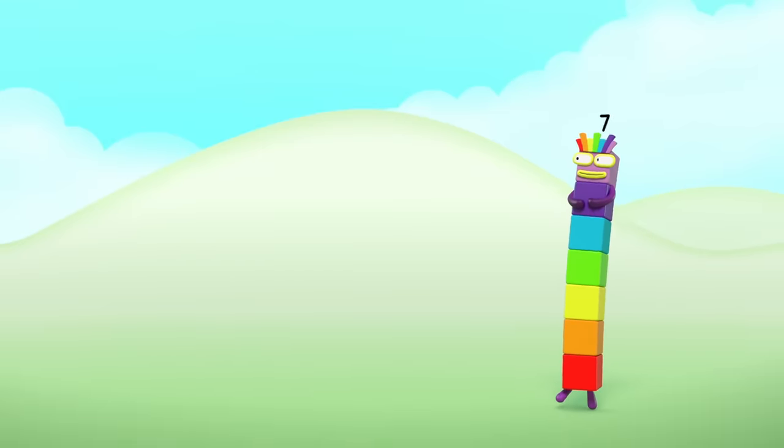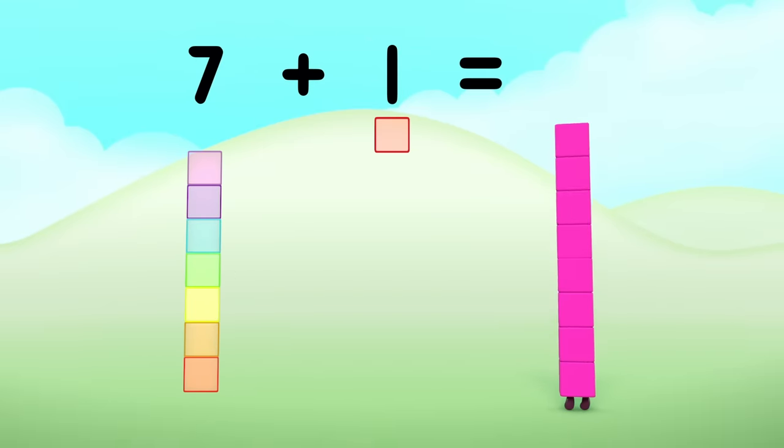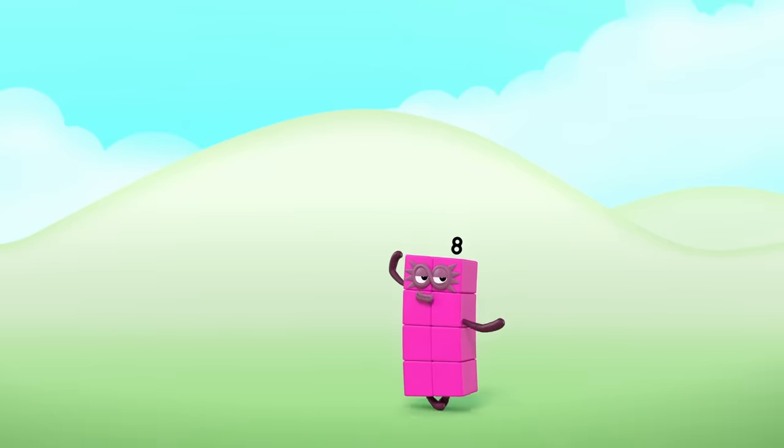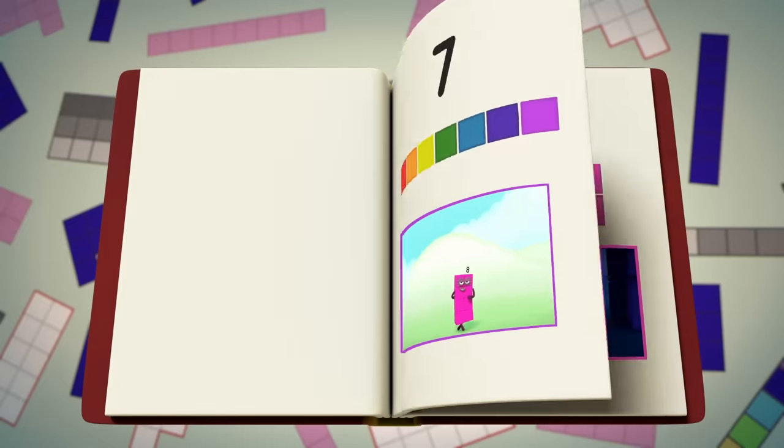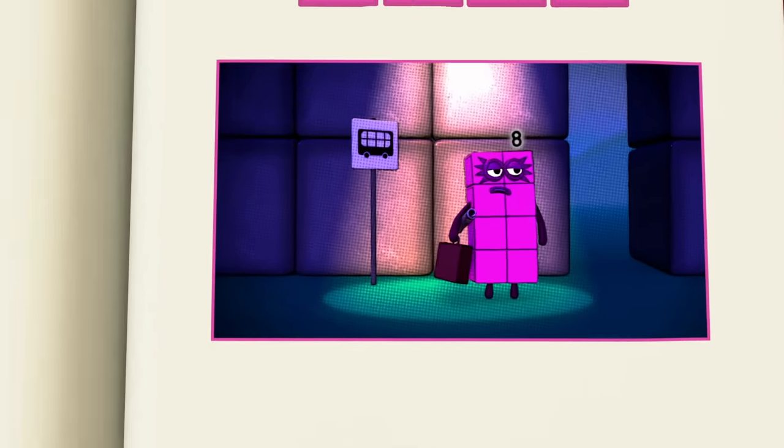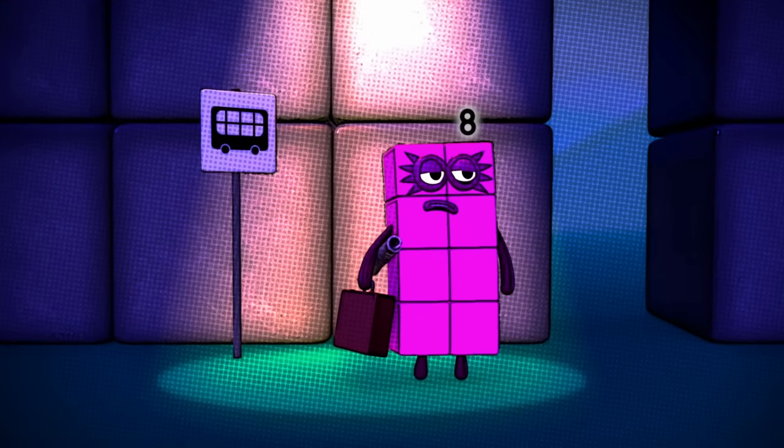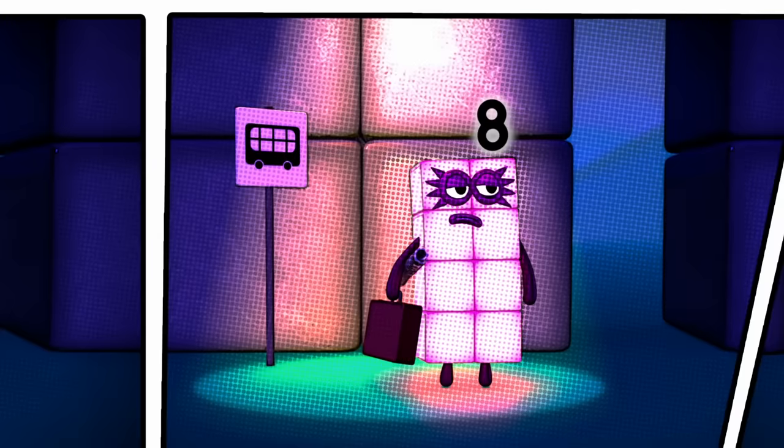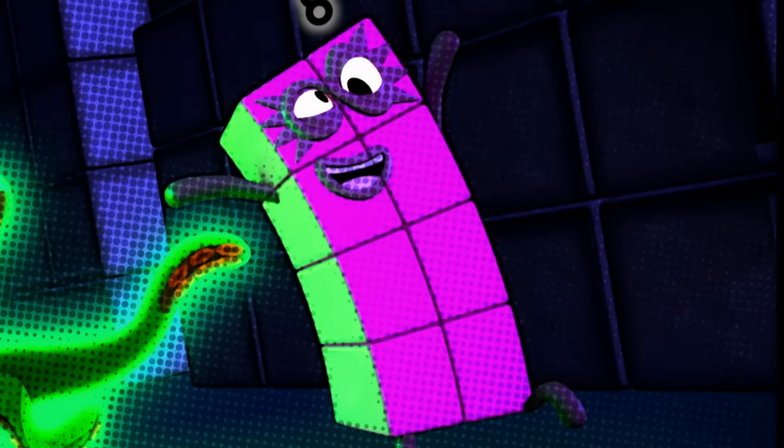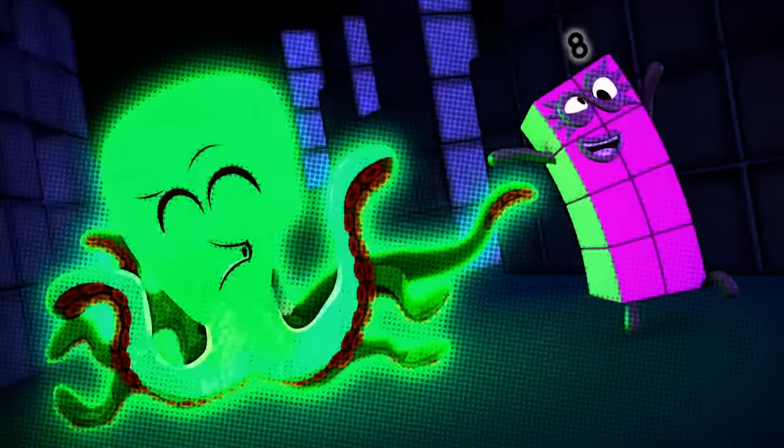Seven plus one equals eight. I am eight, this is great. Chapter eight, the secret story of Octoblock. Once eight was just an ordinary mild-mannered number with eight blocks, and that means eight as well. But one day eight was tickled by a radioactive octopus.